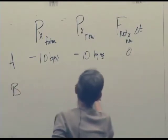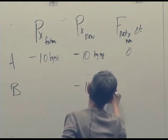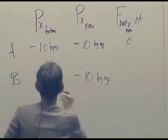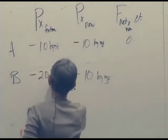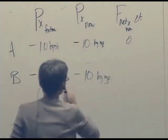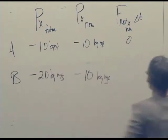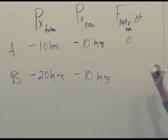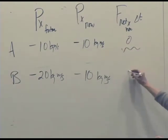B started out at negative 10 kilogram meters per second. But it speeded up. So after some time, it was negative 20 kilogram meters per second. And so, well, so, right. So this whole thing has to have been negative 10 Newton seconds.